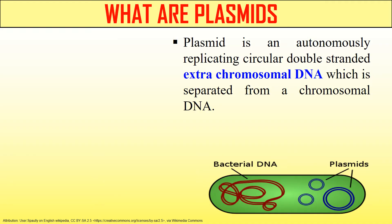Before going into plasmid vectors, we should know what plasmids are. Plasmids are extra-chromosomal DNA molecules which are present in bacteria. In a bacterial cell, there are two kinds of DNA. One is the chromosomal DNA which ultimately forms the genome of a bacterial cell, and beside the chromosomal DNA, the bacterial cell also contains extra-chromosomal DNA which is known as plasmid.